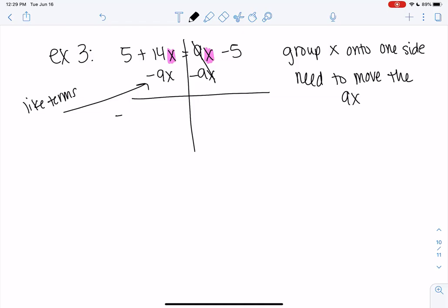So the 5 is just hanging out. It can't really be added to either of these. But the 14x and the 9x can be combined. So we'll do 14 minus 9 which is 5. So it'll be 5x. And then we still have a negative 5 left over on the right side. So it's starting to look a little bit more like the earlier examples.